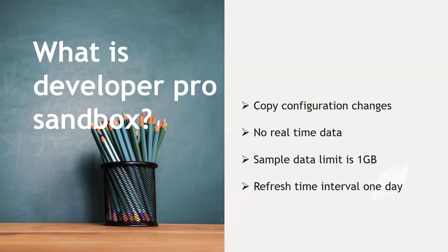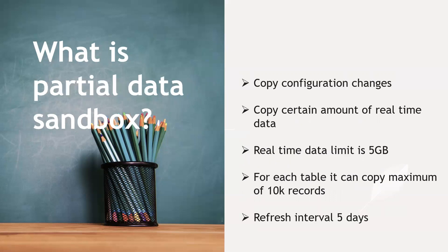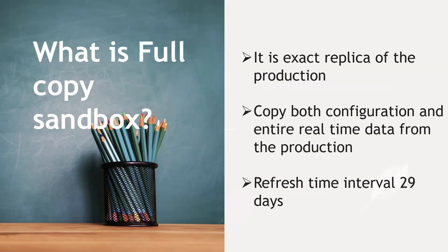The Developer Pro Sandbox is similar — it copies configuration changes, no real-time data, but its sample data limit is 1 GB with a one-day refresh interval. The Partial Data Sandbox copies configuration changes and a certain amount of real-time data — not the entire dataset. The real-time data limit is 5 GB, with a maximum of 10,000 records per table, and a five-day refresh interval. The Full Copy Sandbox is an exact replica of production — it copies both configuration and all real-time data, with a 29-day refresh interval.